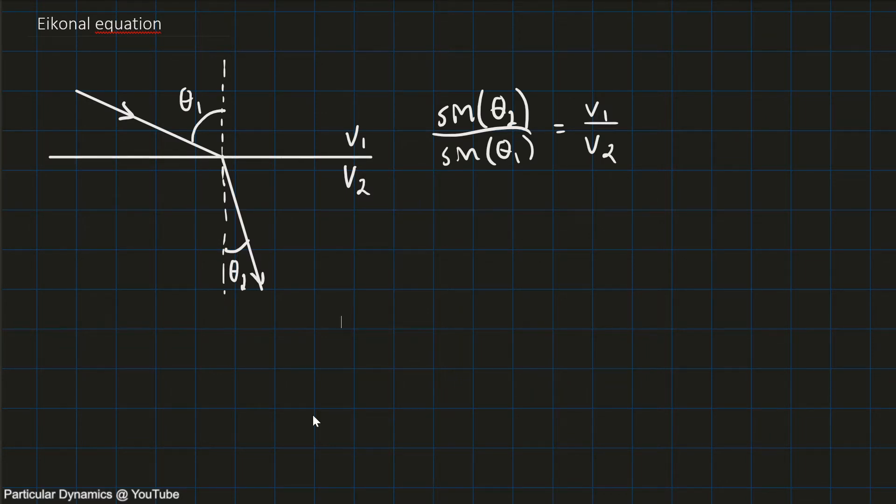I'll go ahead and write the Eikonal equation, which is that the absolute value of the gradient of phi of r equals the inverse of the function v of r.